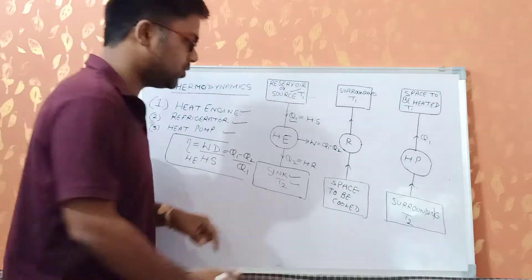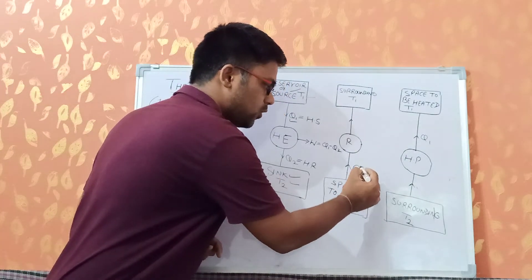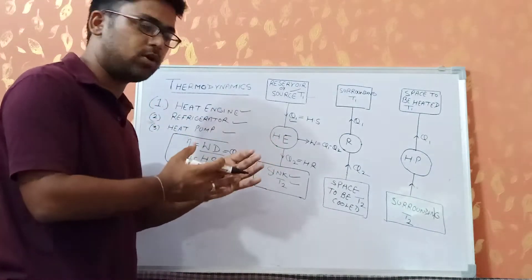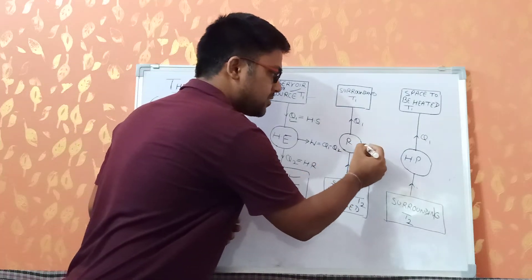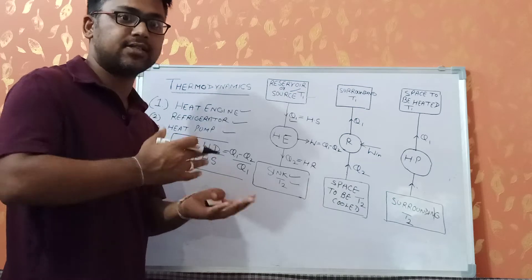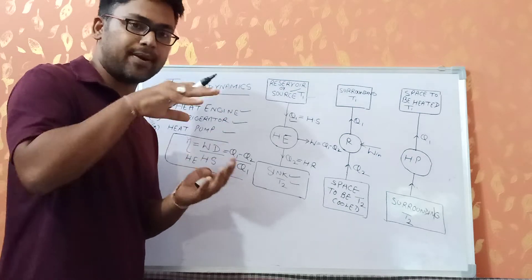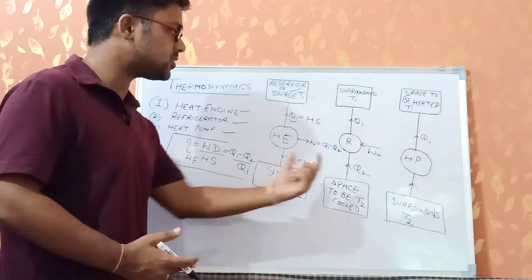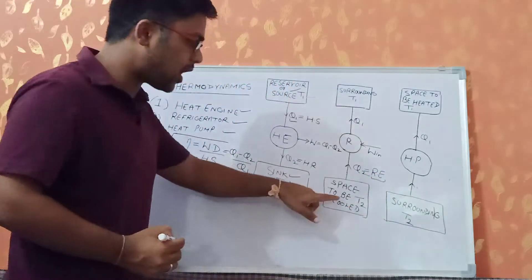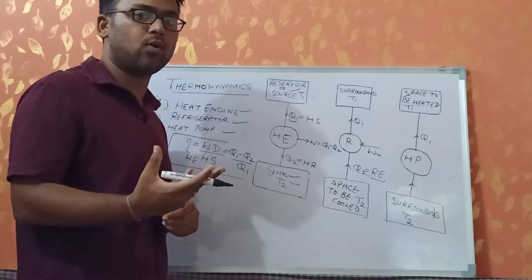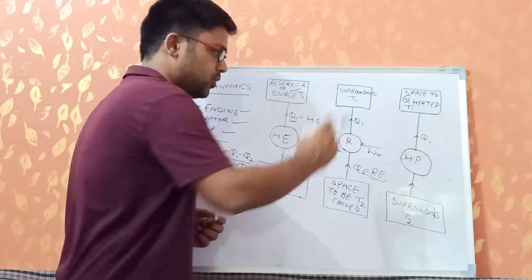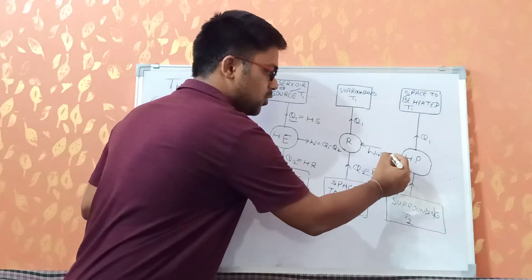In the refrigerator, we have temperatures T1 and T2. We take Q2 amount of heat from the refrigerator (the low temperature body) and give Q1 amount of heat to the surroundings at high temperature. Work input — in terms of electricity — is used to compress the refrigerant to produce the desired cooling. The work input required equals Q1 minus Q2, and the refrigeration effect is the heat removed from the cooled space.